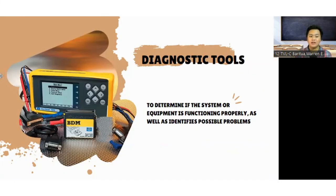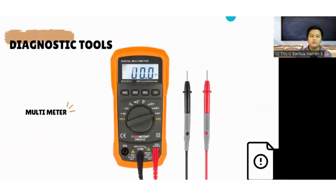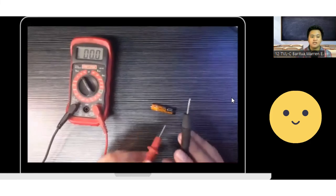Now let's proceed with the diagnostic tools. Diagnostic tools determine if the system or equipment is functioning properly as well as identify possible problems. I have here two common diagnostic tools. This is the multimeter. The multimeter is a measuring instrument that can measure quantities such as resistance, voltage, and current. Multimeters are commonly used for troubleshooting computers. Testing a power supply manually with a multimeter is one of the two tests for a power supply in a computer to confirm whether the power supply is in good condition or should be replaced.